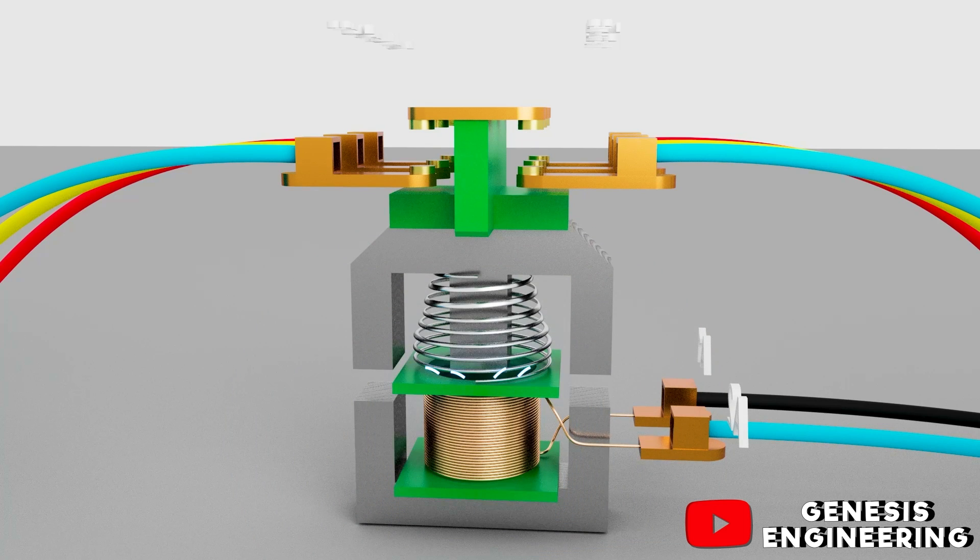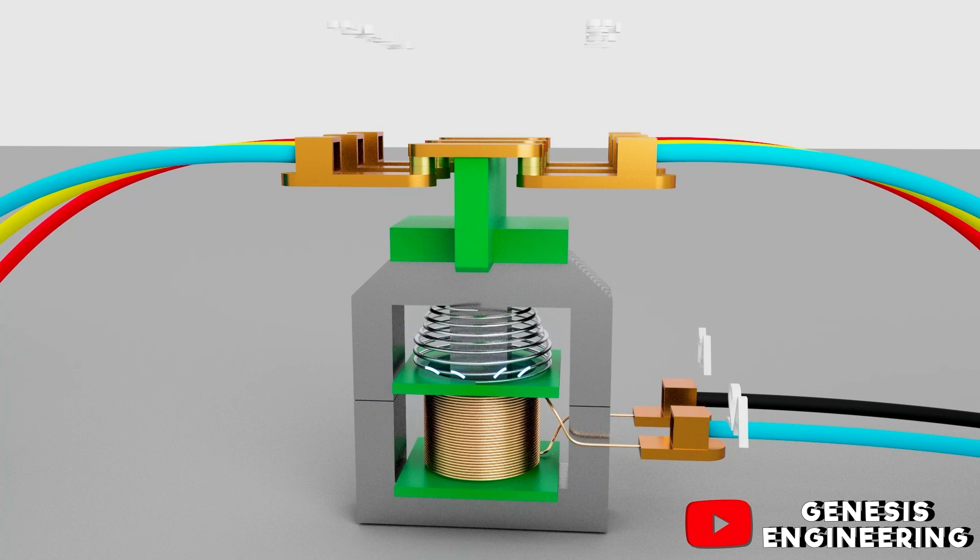The electromagnetic field produced by the coil ends up surrounding the fixed core, and it ends up attracting the moving core. In this way the contactor will close the contacts and start the motor.